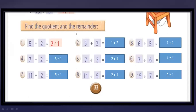Find the quotient and the remainder. 5 divided by 2 equals 2 remainder 1. 5 divided by 3 equals 1 remainder 2. 6 divided by 5 equals 1 remainder 1. 7 divided by 2 equals 3 remainder 1. 7 divided by 3 equals 2 remainder 1. 7 divided by 6 equals 1 remainder 1.